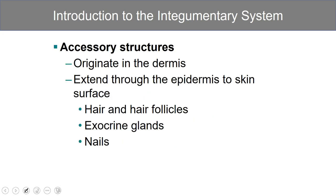The accessory structures of the skin originate in the dermis, though they extend through the epidermis onto the surface of the skin. They include hair, nails, and glands.